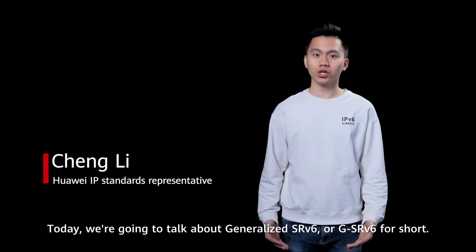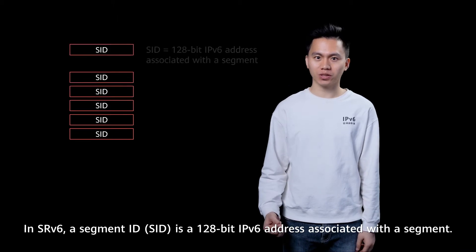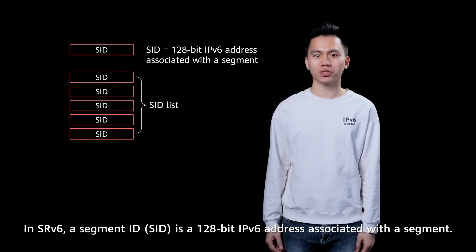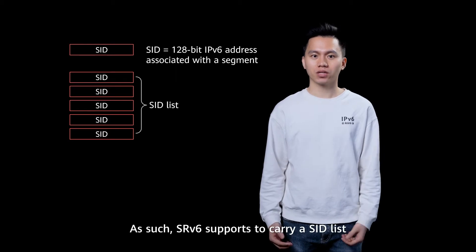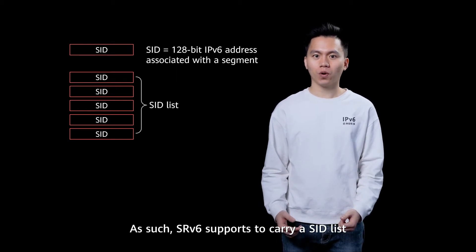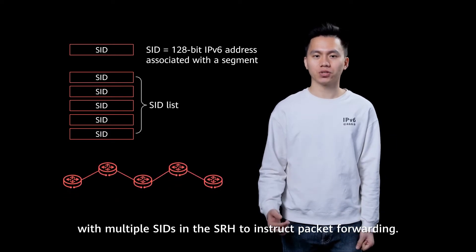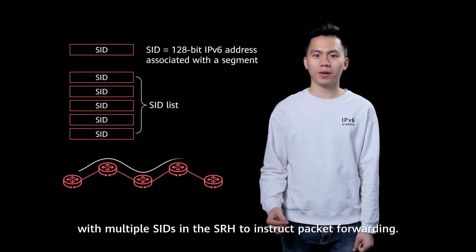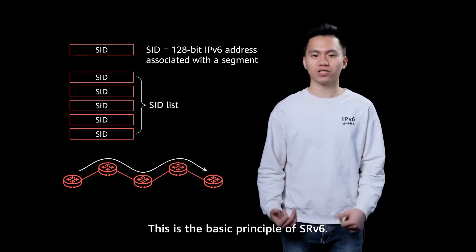Hi guys, today we are going to talk about Generalized SRV6, or GSRV6 for short. In SRV6, a segment ID is a 128-bit IPv6 address associated with the segment. As such, SRV6 supports carrying a segment list with multiple segments in the SRH to instruct packet forwarding. This is the basic principle of SRV6.